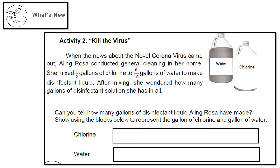Under 'What's New,' there is Activity 2. The title is 'Kill the Virus.' When the news about the novel coronavirus came out, Aling Rosa conducted a general cleaning in her home. She mixed 1/2 gallon of chlorine with 8/10 gallons of water to make disinfectant liquid. She wondered how many gallons of disinfectant solution she has in all. Can you tell how many gallons Aling Rosa made?